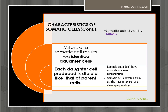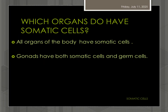Finally, we can say somatic cells develop from the germ layers of the embryo. Now, let us see which organs have somatic cells. All organs of the body have somatic cells, but the gonads have both somatic cells and germ cells. So we can say somatic cells are present in all organs including gonads, because sometimes we think that gonads have only germ cells — that is not the case. Gonads have both somatic cells and germ cells.